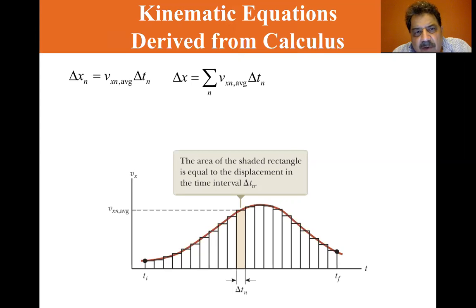As the intervals are made smaller and smaller, the number of terms in the sum increases. The sum approaches the value equal to the area under the curve in the velocity versus time graph.